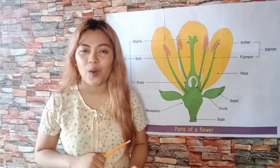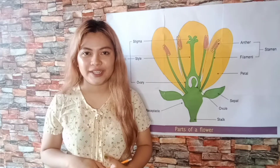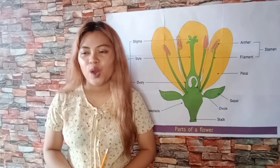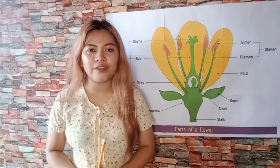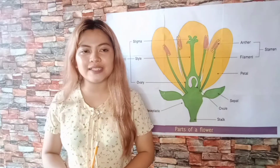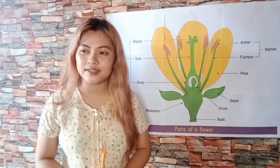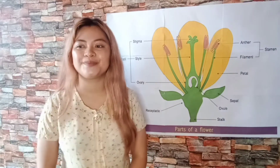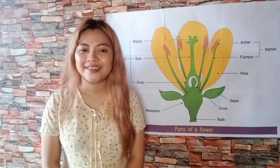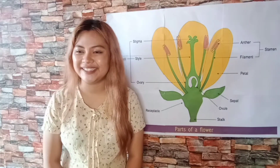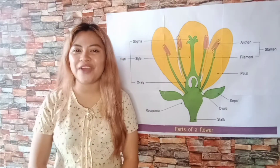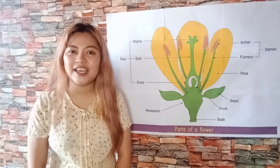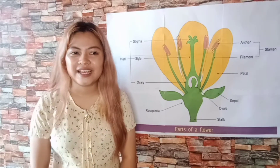Another question: who can give me an example of a flower that has yellow petals, a different flower apart from rose? What is it? Yes — sunflower. Very good! Sunflower has yellow petals. Thank you for participating.